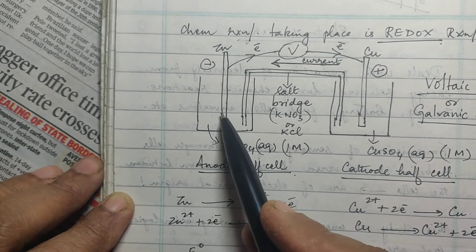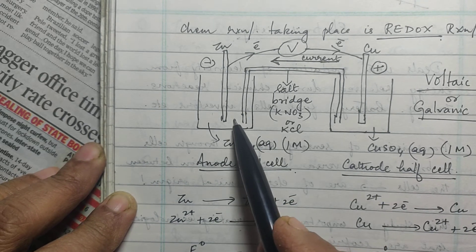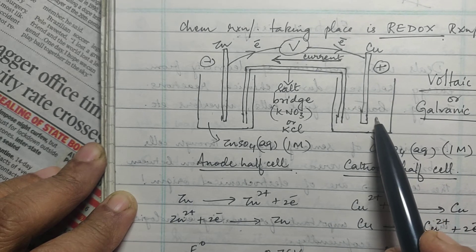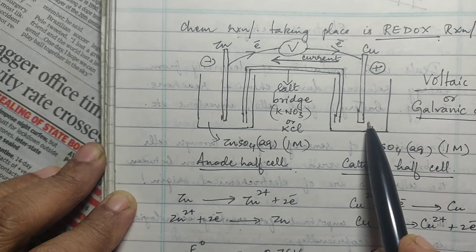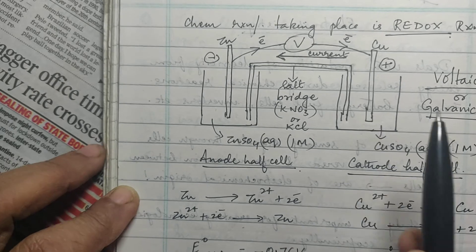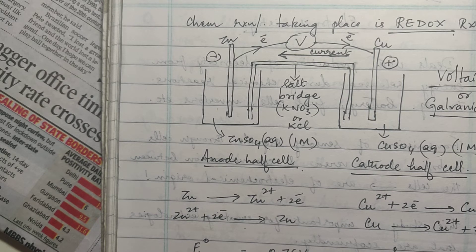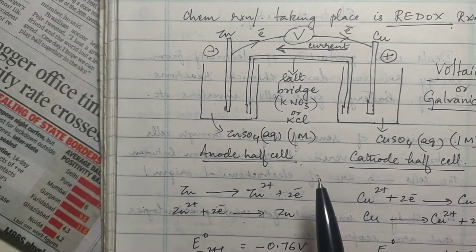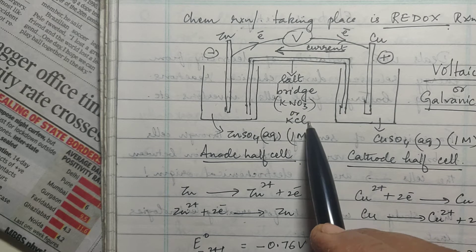When the anode reaction (oxidation) starts, zinc loses electrons which travel through the external circuit, and Zn²⁺ ions go into solution — creating an excess of Zn²⁺ at the anode. At the cathode, Cu²⁺ ions from solution get reduced, creating a deficiency of Cu²⁺ there. This electrical imbalance is managed by the salt bridge, which is made of KCl or KNO₃.